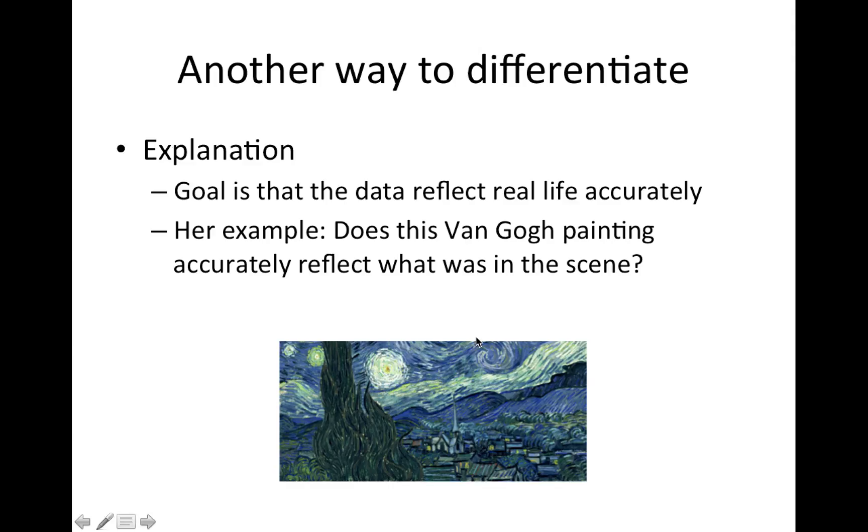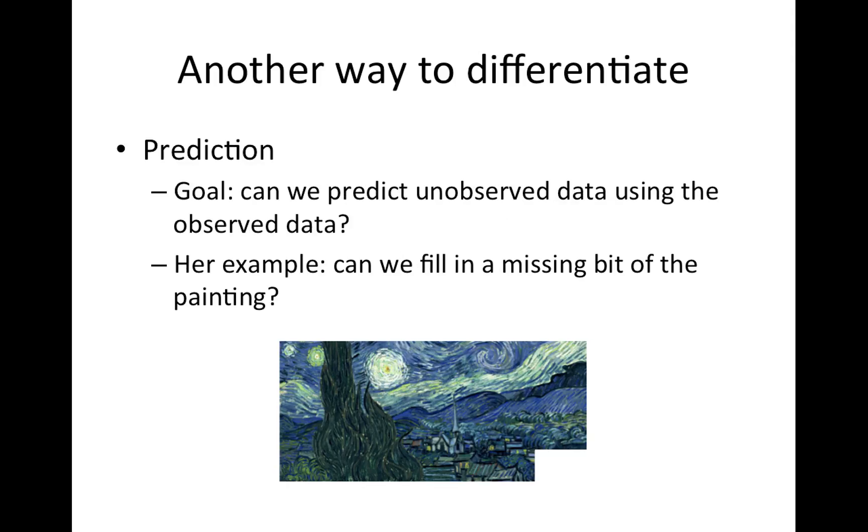This is an illustration that she uses in her talk. She's talking about this Van Gogh painting and uses this to differentiate between explanation and prediction. With explanation, the goal is you want to know what this - obviously he was looking at some town when he painted this - if the goal is explanation you want this painting to very closely reflect what was actually there. You want the data you have to match reality accurately.